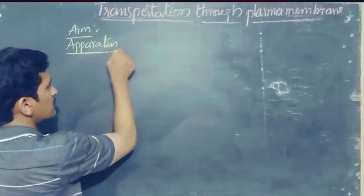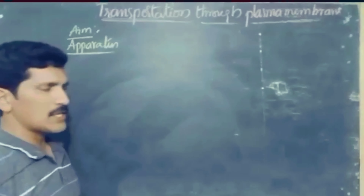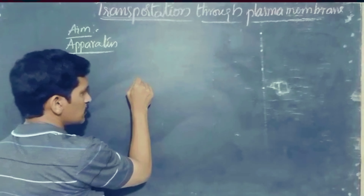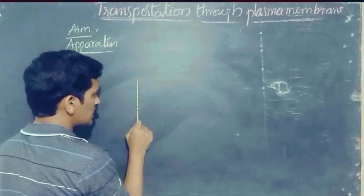How the plasma membrane allows materials to pass through, by a simple activity. We have to follow some kind of a measure — that includes aim, apparatus, procedure, and observation. The aim is to observe the functions of the plasma membrane.